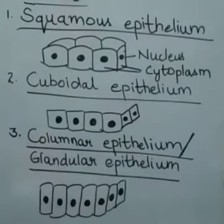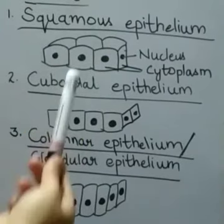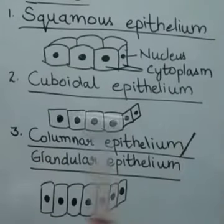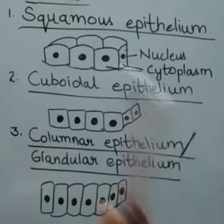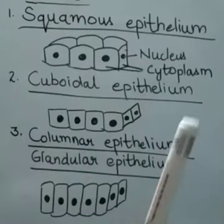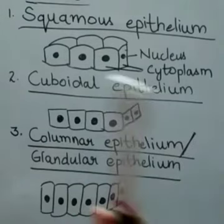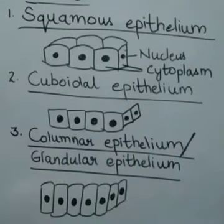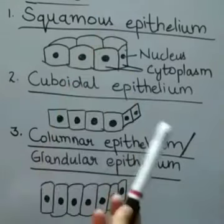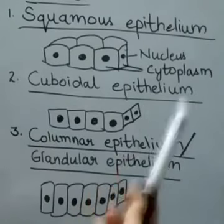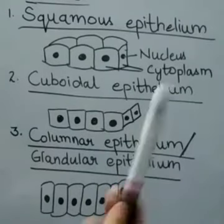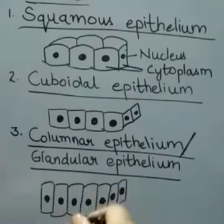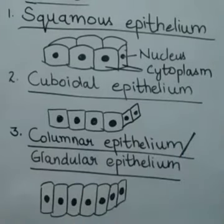Squamous cells form the delicate lining of cavities like the mouth, esophagus, nose, alveoli, blood vessels, and covering of the tongue and skin. Their function is to protect the underlying parts of the body from mechanical injury, entry of germs, chemicals, and drying.